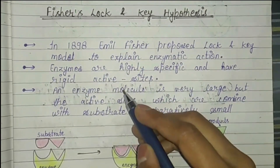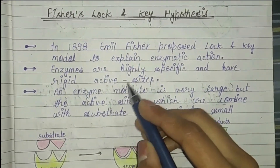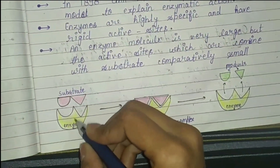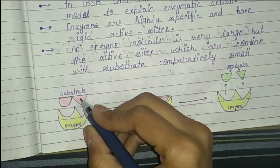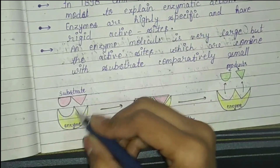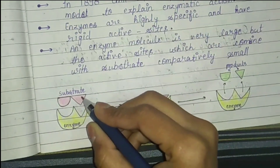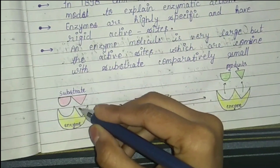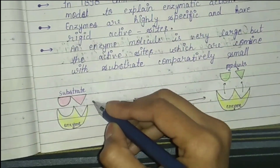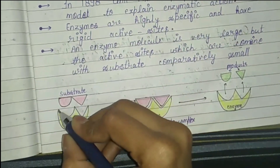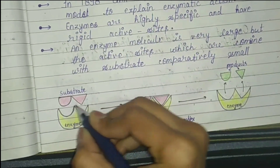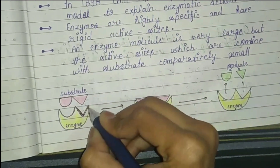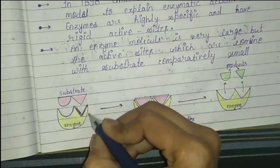What is the active site? The enzyme is the larger molecule and the substrate attaches to it. The enzyme connects to the substrate at the active site. The active site is the specific region of the enzyme where the substrate binds.